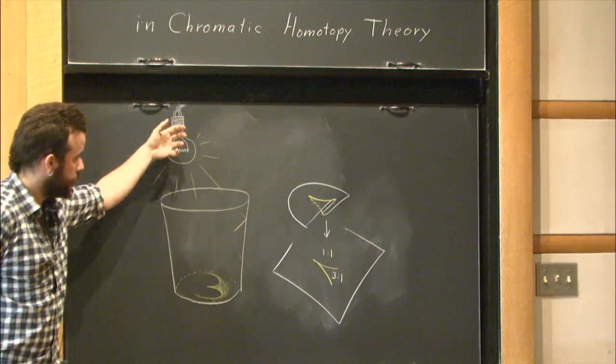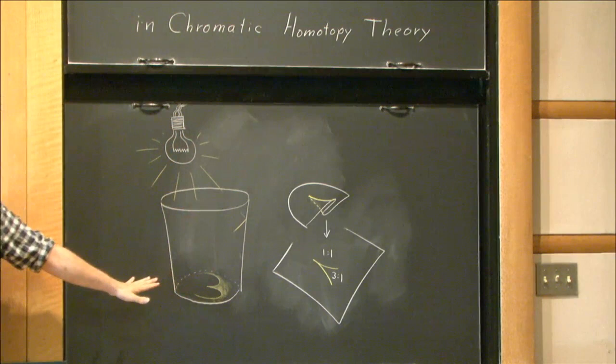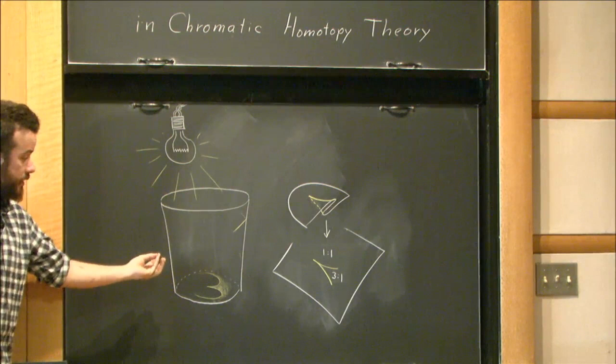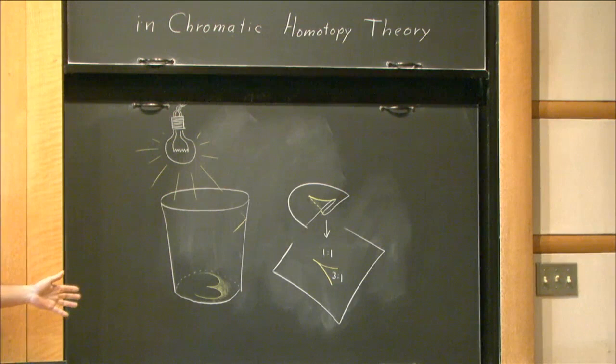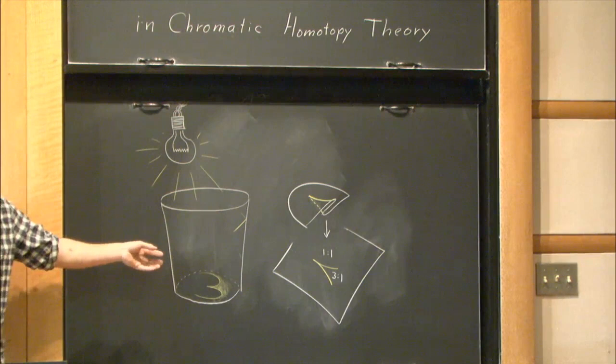This is a very simple object. It's a semicubical cusp. We understand it, but in higher dimensions or in parametric families, the singularities that one can get generically are very complicated. There's no hope of classifying them. What I proved in my thesis is that if there is no homotopy theoretic obstruction to removing them, then you can remove these higher singularities by Hamiltonian isotopy.